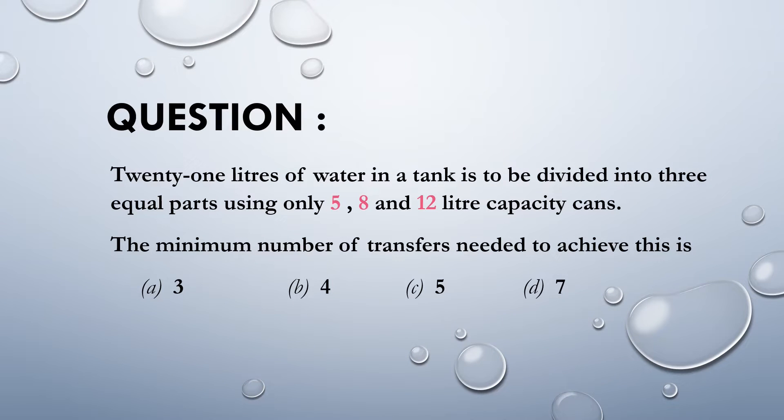21 liters of water in a tank is to be divided into 3 equal parts using only 5, 8 and 12 liter capacity cans.